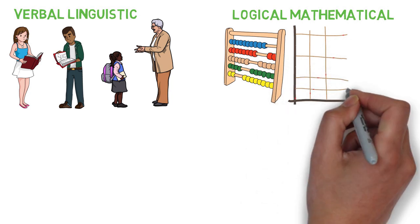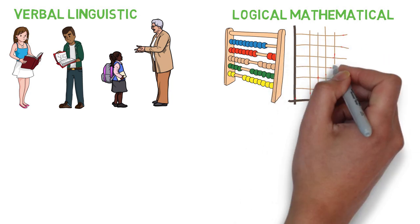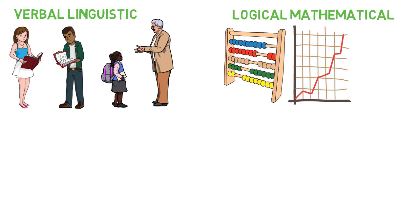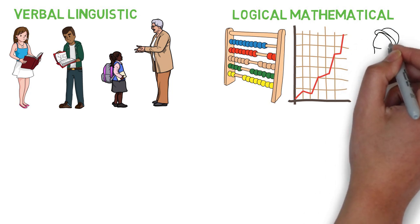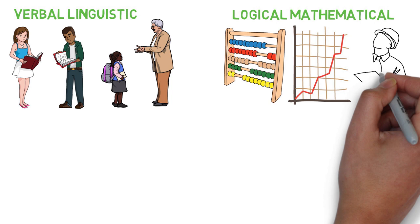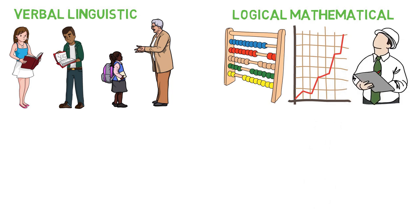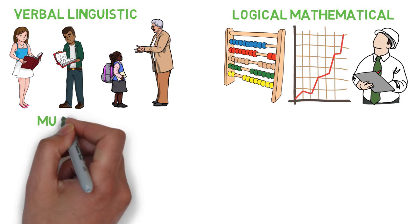They are good at reasoning skills, decoding abstract symbols such as formulas and using computer programs. Logical mathematical intelligence is high among engineers, accountants, lawyers, mathematicians and scientists. The third type is musical intelligence.